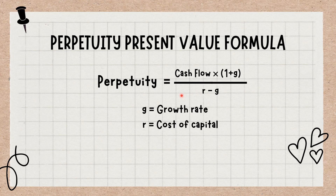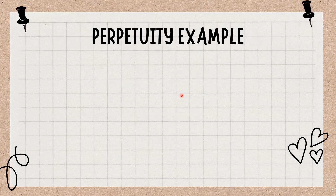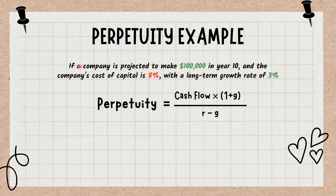Perpetuity Example. For example, if a company is projected to make $100,000 in year 10, and the company's cost of capital is 8% with a long-term growth rate of 3%, the perpetuity equals projected cash flow multiplied by 1 plus the growth rate, divided by the cost of capital minus the growth rate.